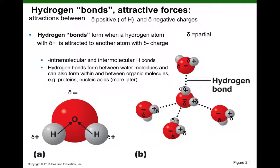Then in the next slide, when I was describing the hydrogen bonds formed between water molecules, I think I made a mistake. So I should have said that the partial negative of the oxygen of one water molecule will form an attractive force with the partial positive hydrogen of another water molecule, and that will be the hydrogen bond. So the hydrogen bond is between a partial negative of one atom and a partial positive of another atom.